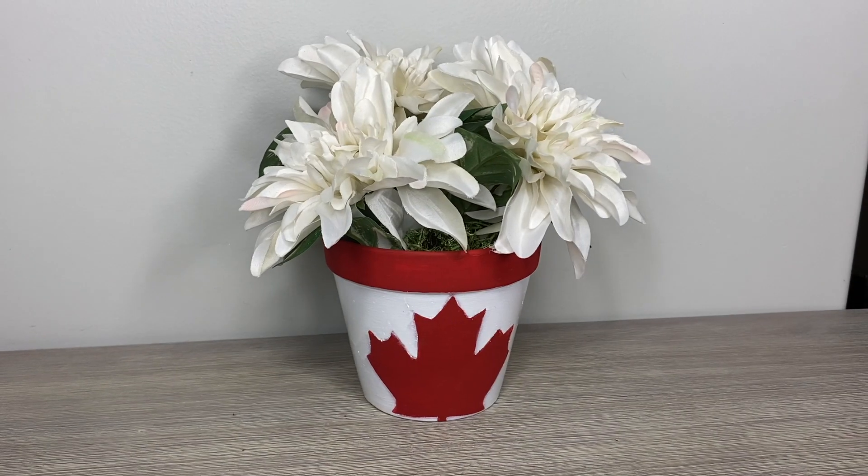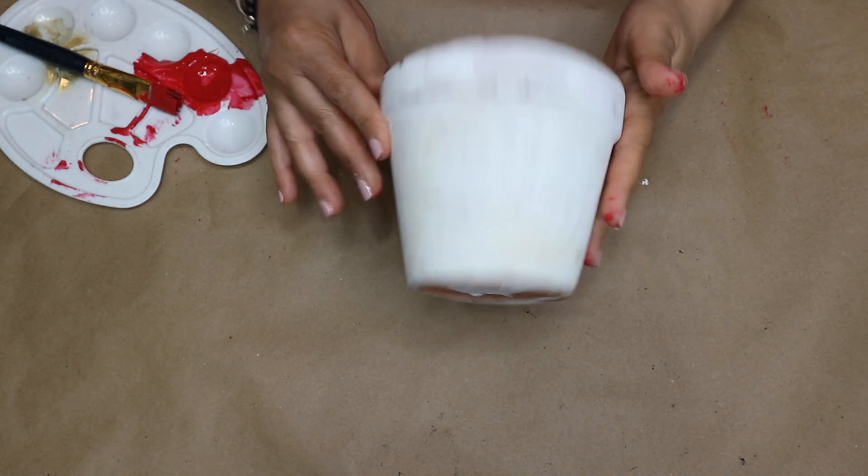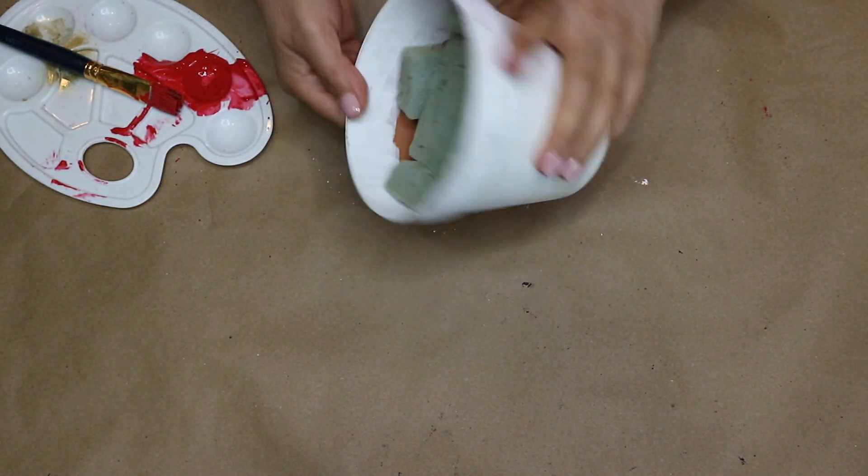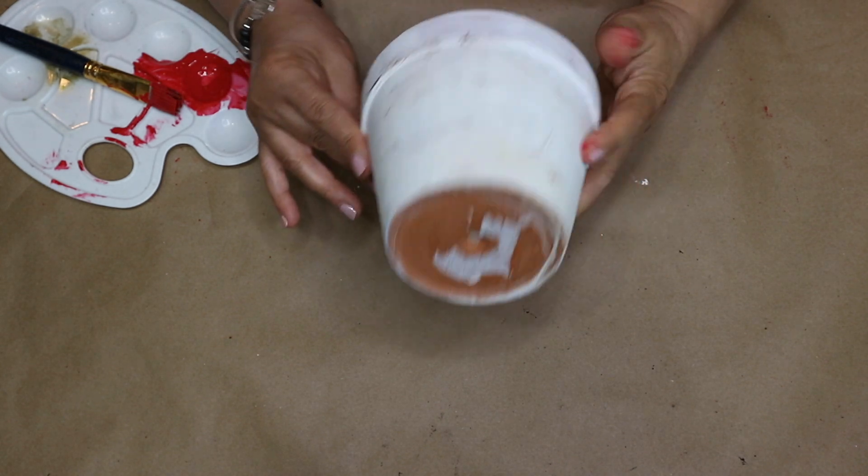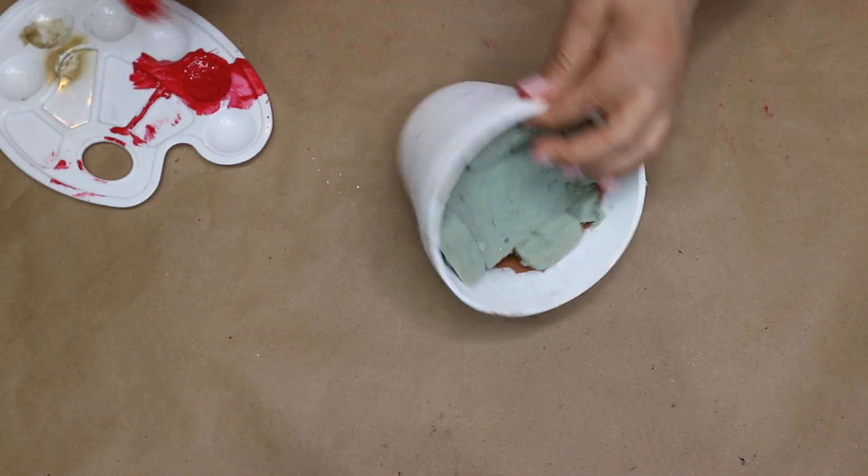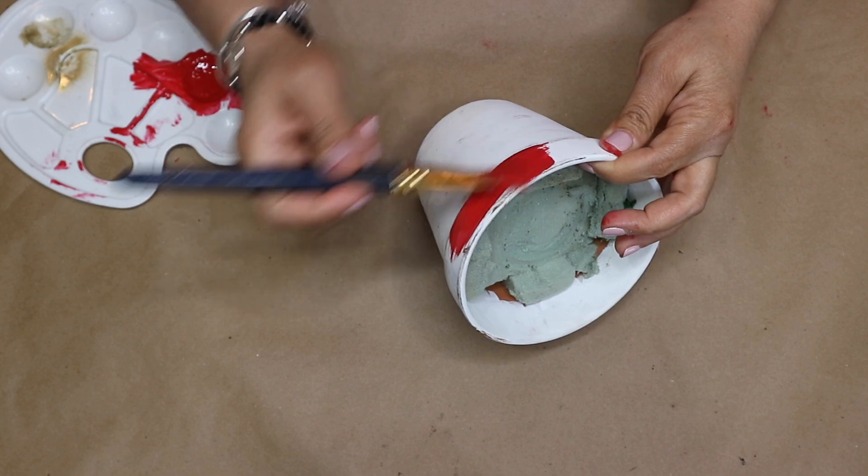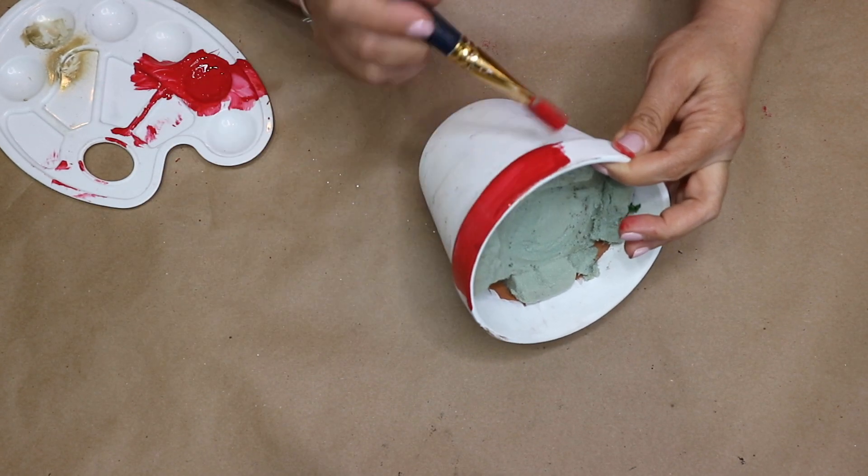Next project is also super simple. I am using this old terracotta pot that I used in a different project. As you can see I painted it in white and distressed it with some brown. Also I still have some floral foam inside it. So what I'm gonna do here is that I will paint around the rim of the pot with some acrylic red paint.